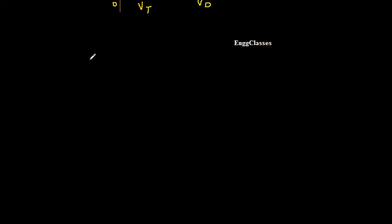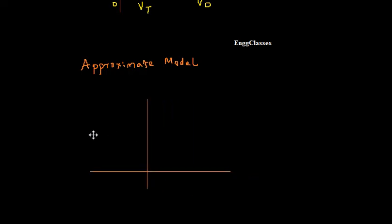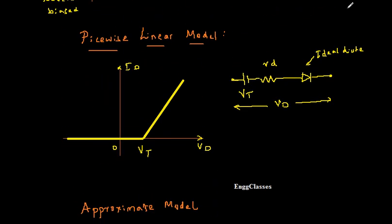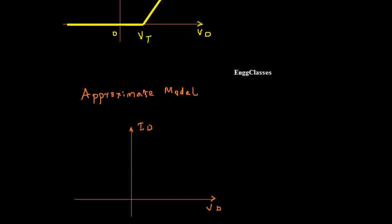Now let me consider the third one — the approximate model. The y-axis is the current ID and the x-axis is the forward voltage Vd. This can be derived from the piecewise linear model. In the piecewise linear model, once the diode starts conducting there is some dynamic resistance. In the approximate model, once the diode starts conducting there is no resistance at all — Rd is made equal to zero.